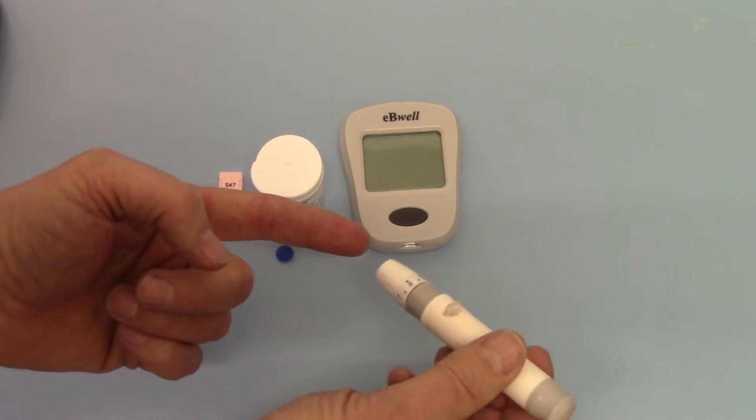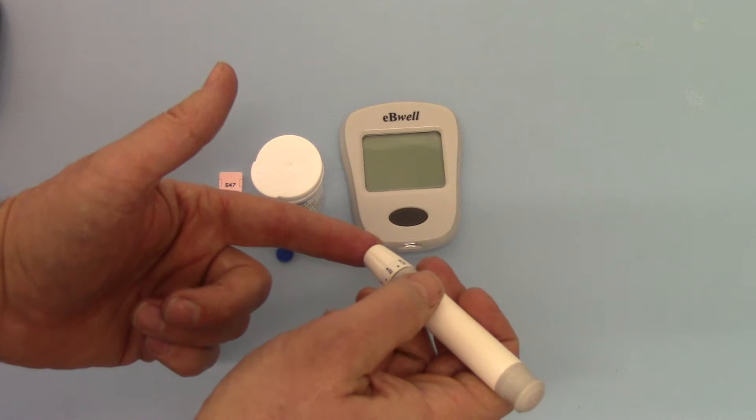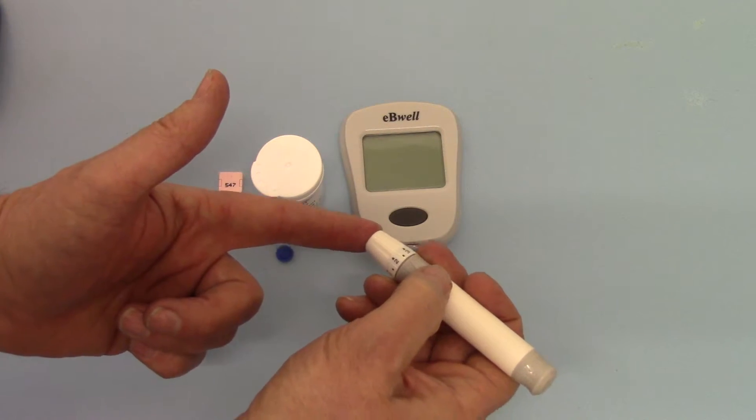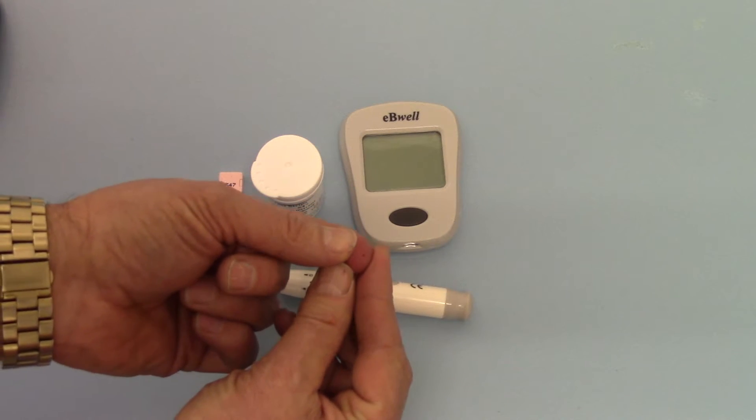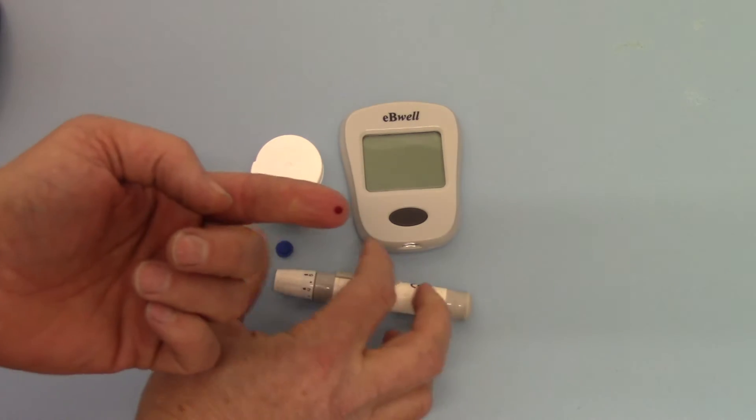So I'm going to do an auto lance on myself now. It's a little cold in here so I'm hoping it's going to adequately get a blood sample for you. To trigger the lance device you just press the button here and now we have a lovely drop of blood ready for testing.